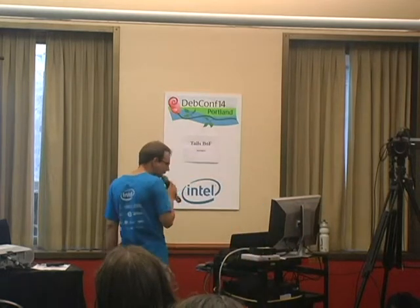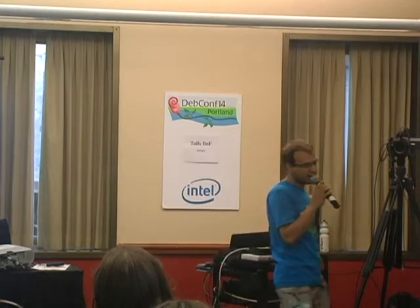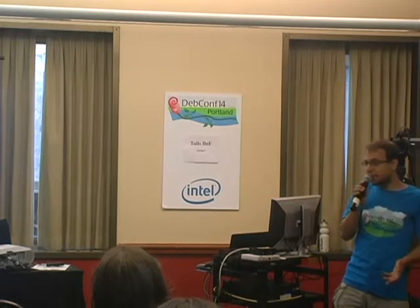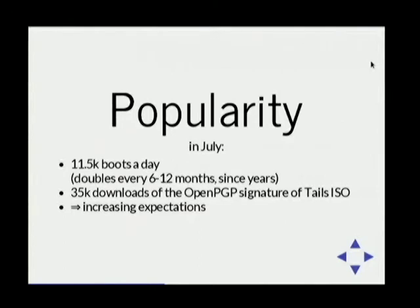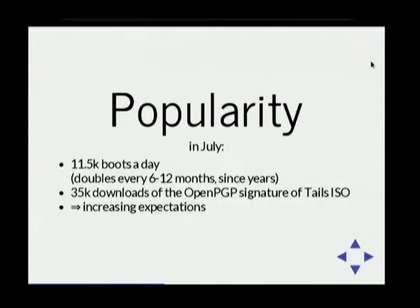In July we also had 35,000 downloads of the OpenPGP detached ISO signature, which means probably at least 35,000 ISO downloads — and probably many more because most users don't really check the signature, because OpenPGP sucks. These numbers tend to go higher and higher every day. The number of boots a day has doubled between last October and July, and it's not just the Snowden effect — it's been doubling every 6 to 12 months for years.